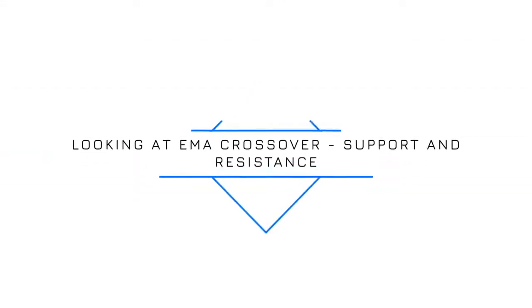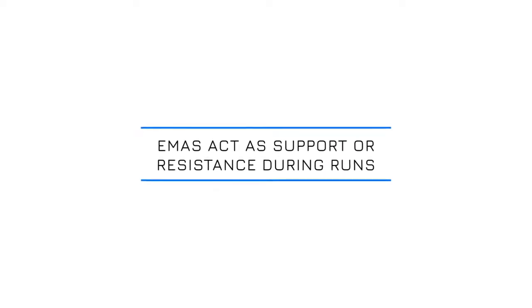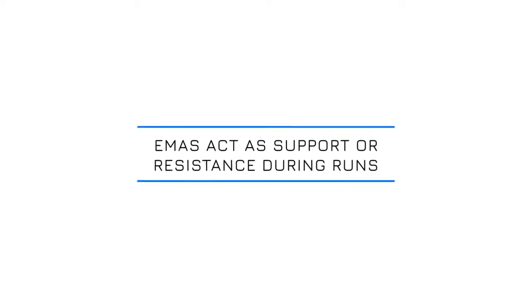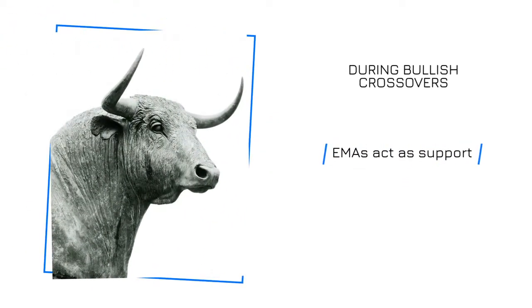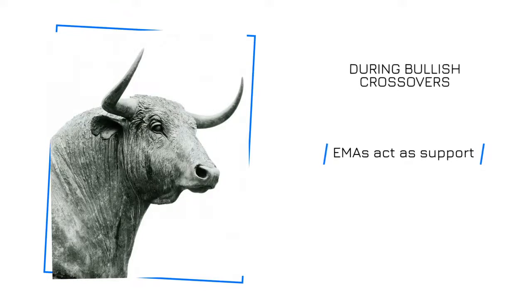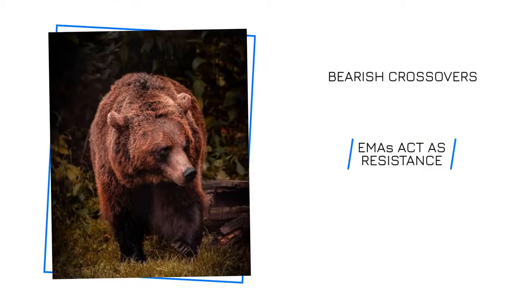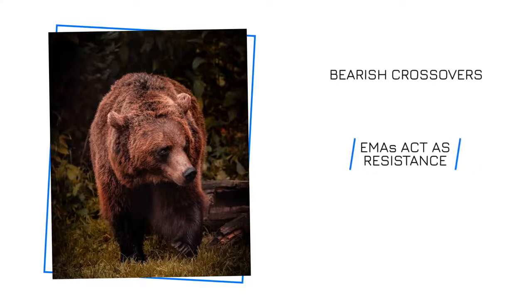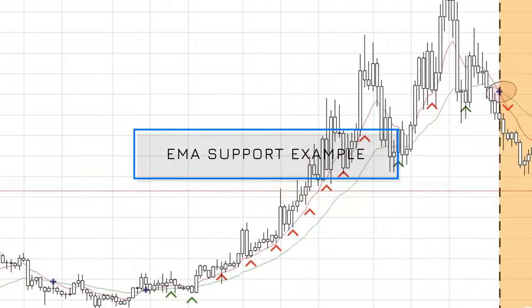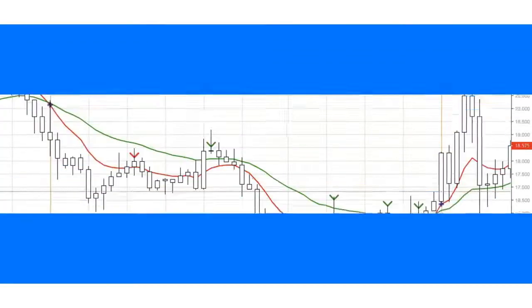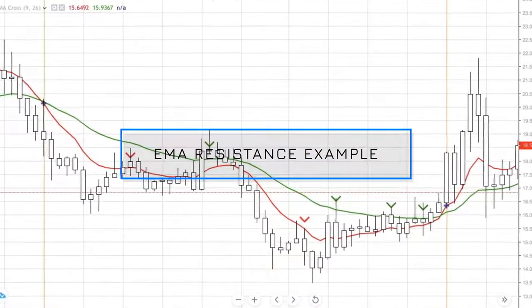EMA crossovers also provide support and resistance. During bullish and bearish crossover runs, the red and green EMAs act as support or resistance. During a bullish crossover, the 9 day EMA will act as minor support, with the 26 day EMA acting as major support. During a bearish crossover, the 9 day EMA will act as minor resistance, with the 26 day EMA acting as major resistance. Examples of the EMA providing support and resistance are shown on the screen.